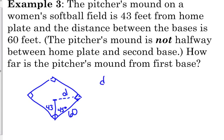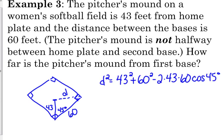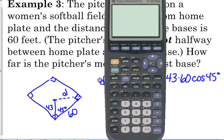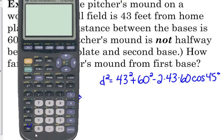So law of cosines would say that d squared is equal to 43 squared plus 60 squared, minus 2 times 43 times 60 times the cosine of 45 degrees. So all we have to do is crunch the numbers and take the square root. Yes, that is it.